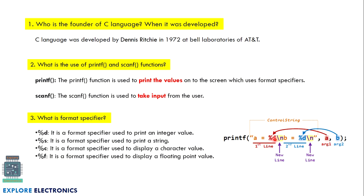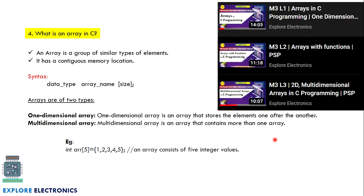What is an array in C? Array is a group of similar type of elements stored in a continuous memory location. The syntax for an array is: data type, then the array name, and then we specify the size. The types of array are one-dimensional array and multi-dimensional array. For example, int ARR[5] = {1, 2, 3, 4, 5} — ARR is the name, 5 is the size, and those are the five integer values the array holds.